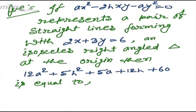This time I am taking the question: if ax² - 2hxy - ay² = 0 represents a pair of straight lines forming with 2x + 3y = 6 an isosceles right-angled triangle at the origin, then find the value of 12a² + 5h² + 5a + 12h + 60.